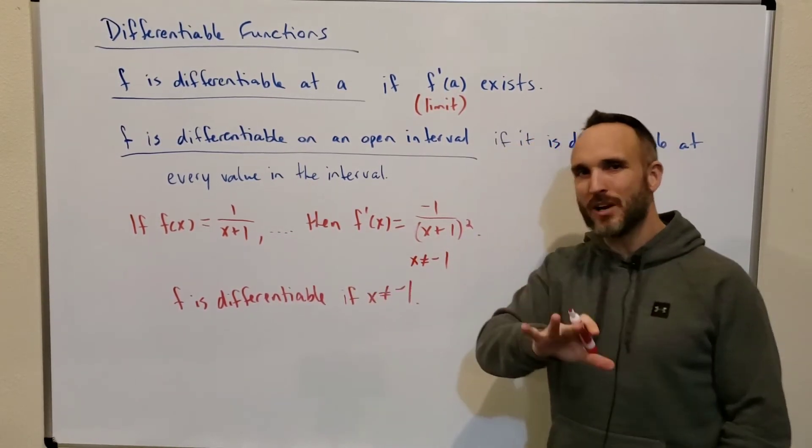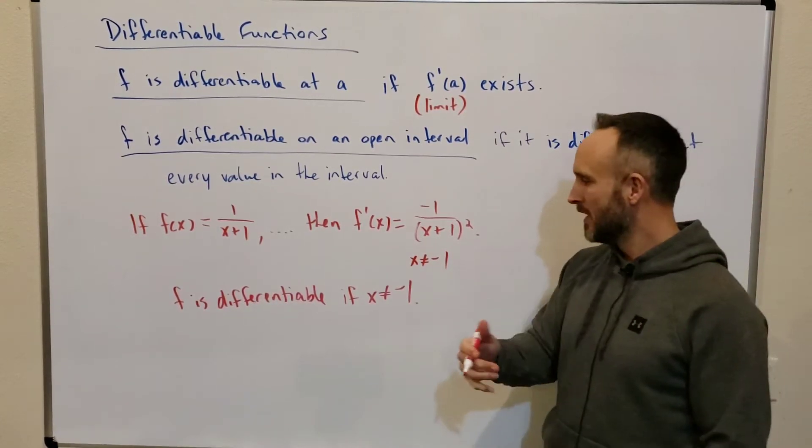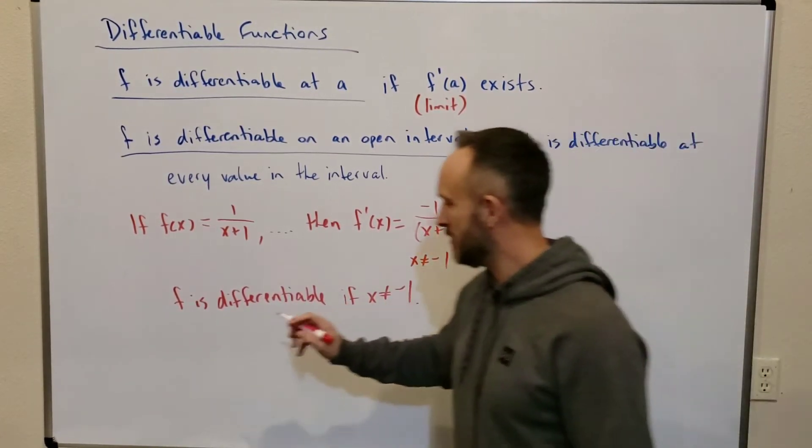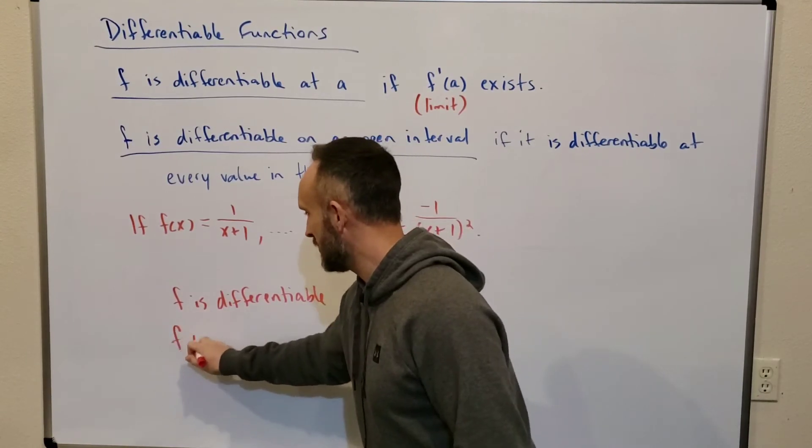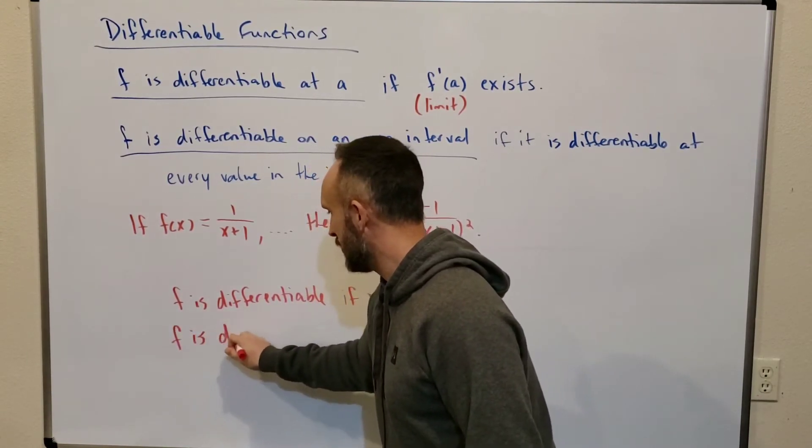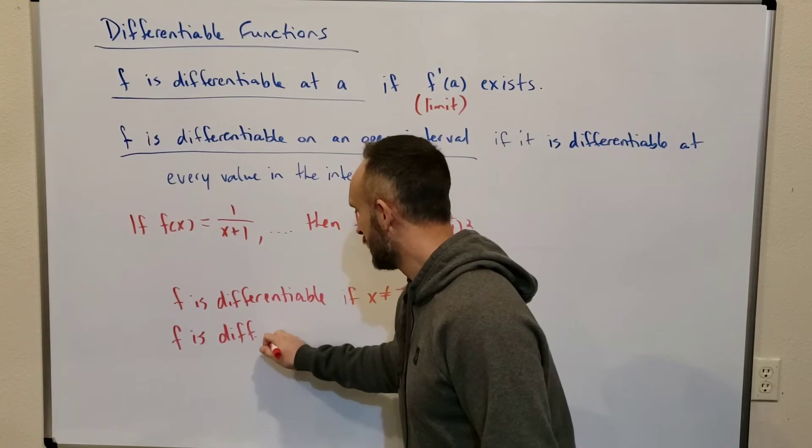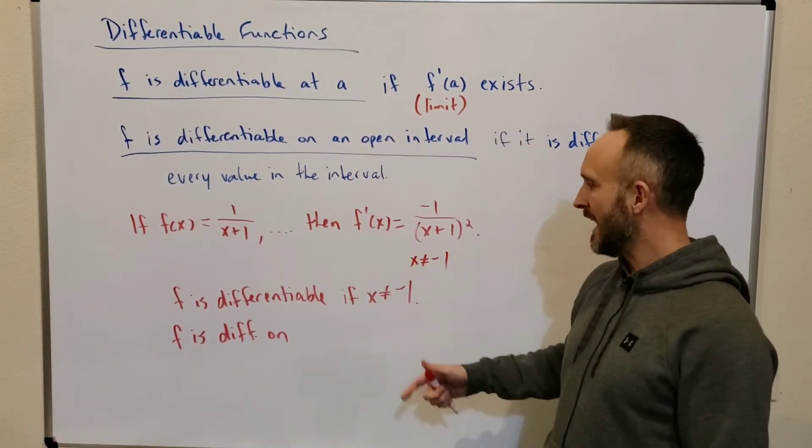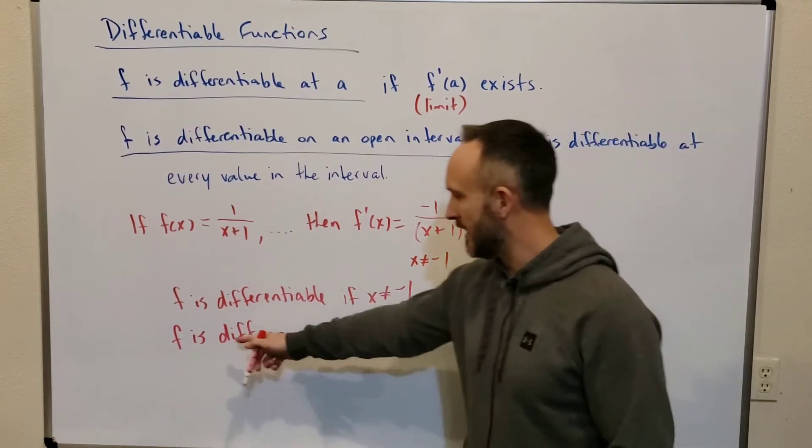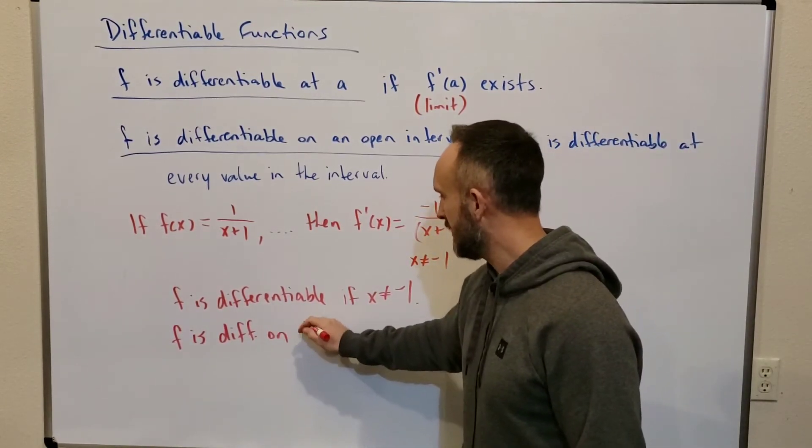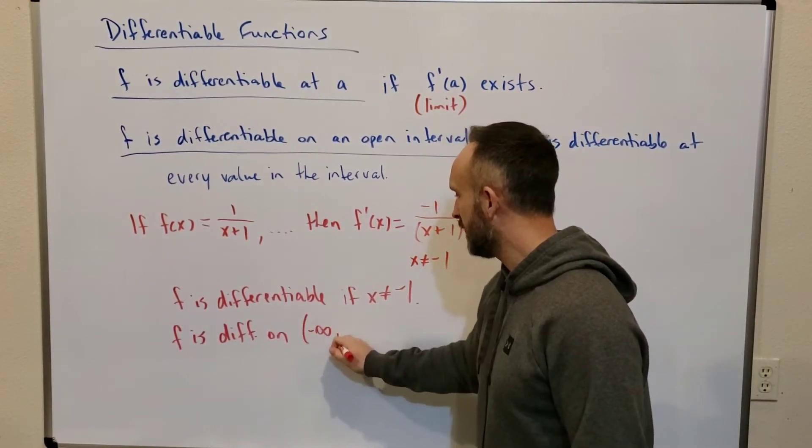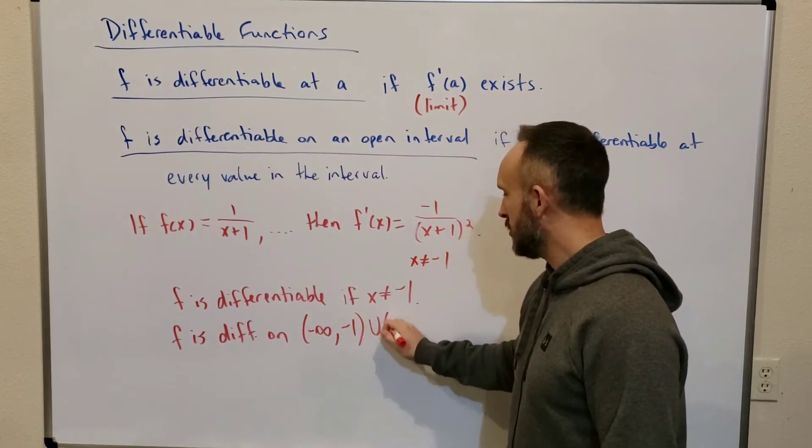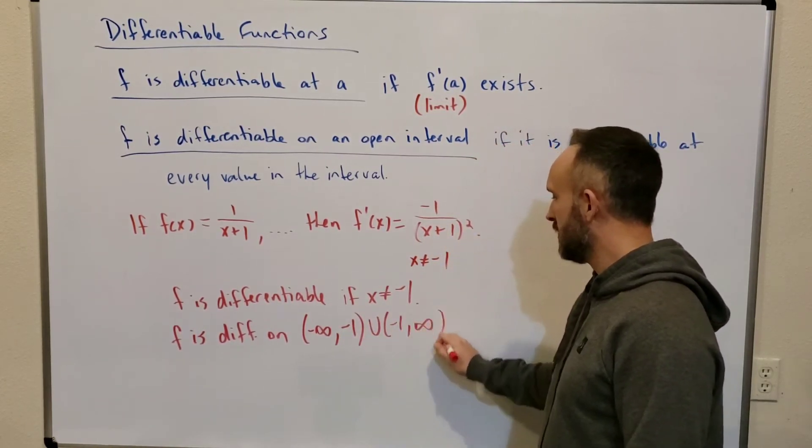Any other x value, f is differentiable. So typically what we do is use an interval notation. So we'd say f is differentiable on - when you go to intervals, you say on, not at or something like this. So I'd say f is differentiable on the interval notation, negative infinity to negative 1, union negative 1 to infinity.